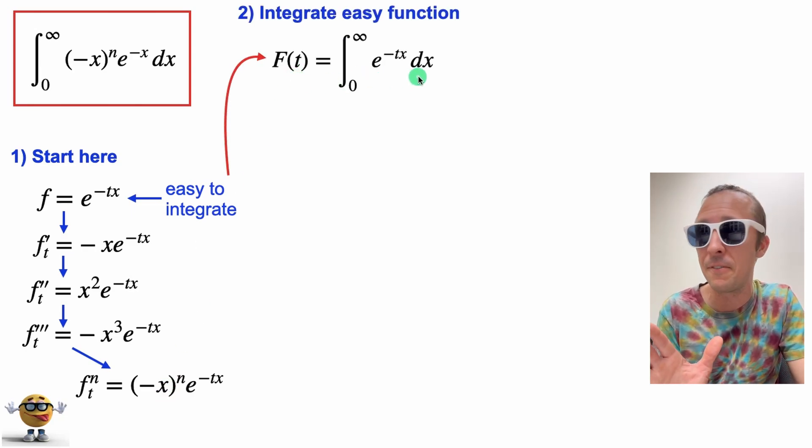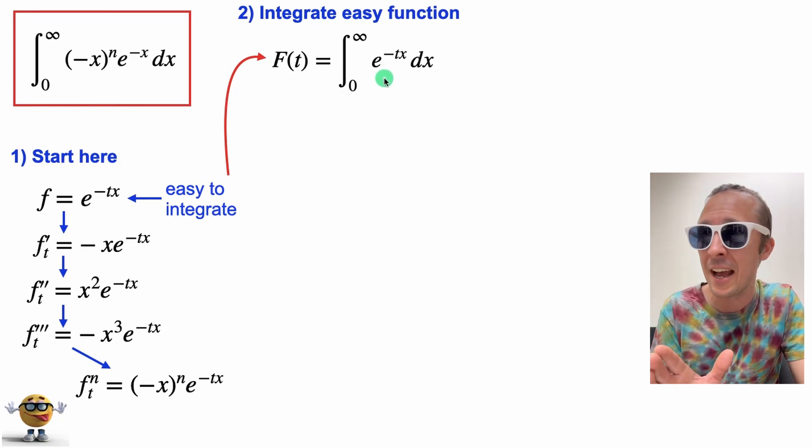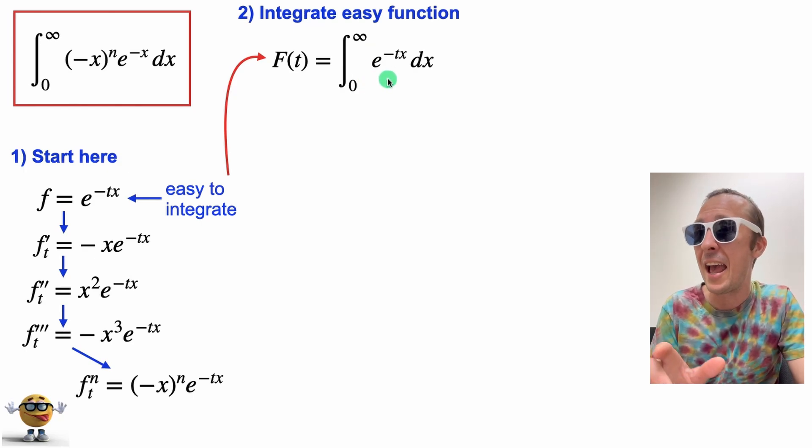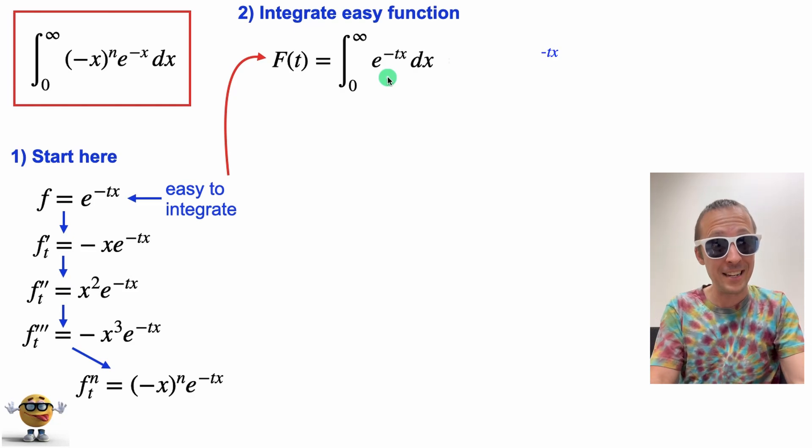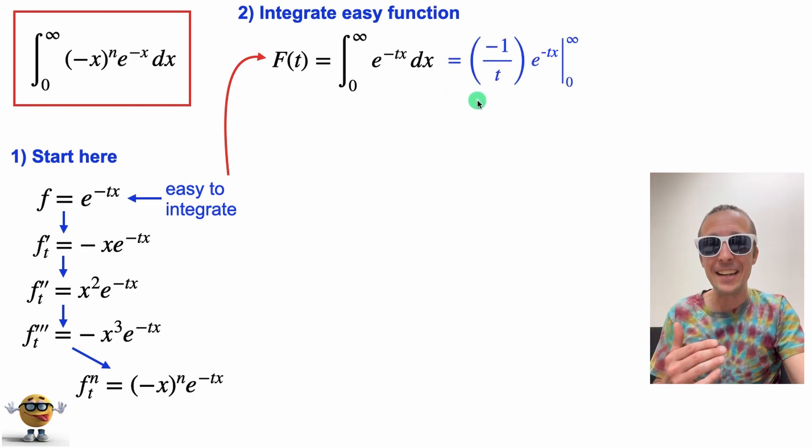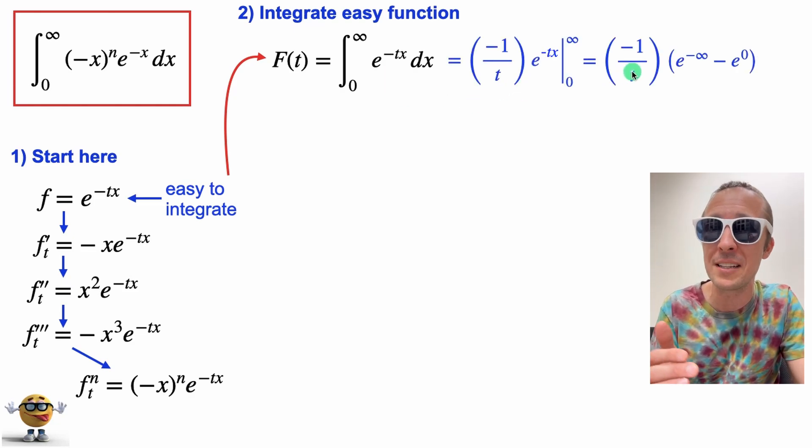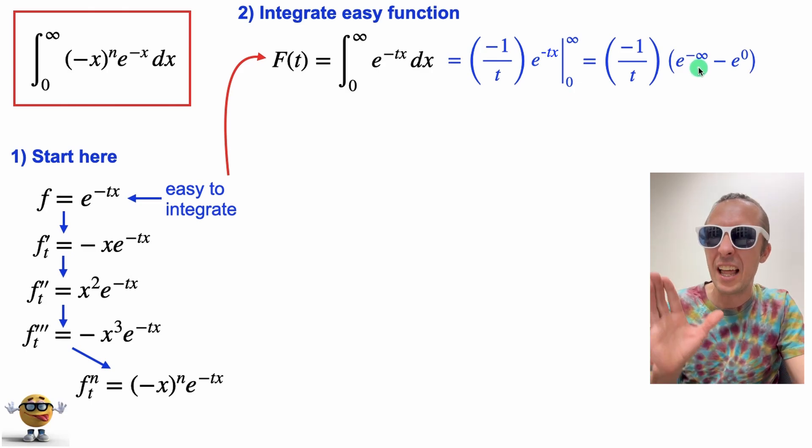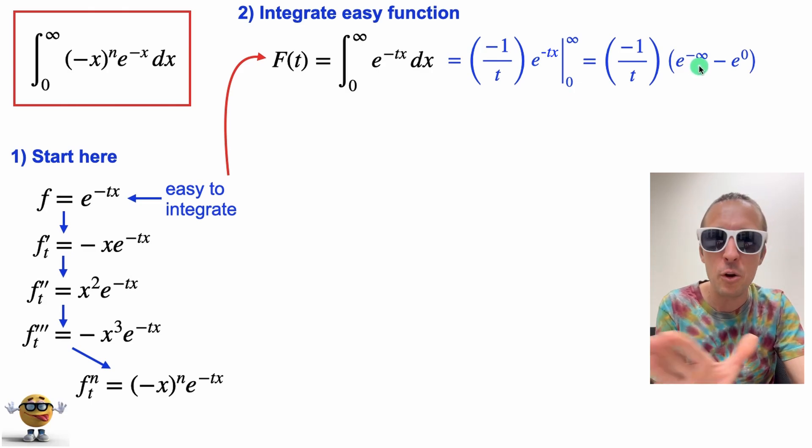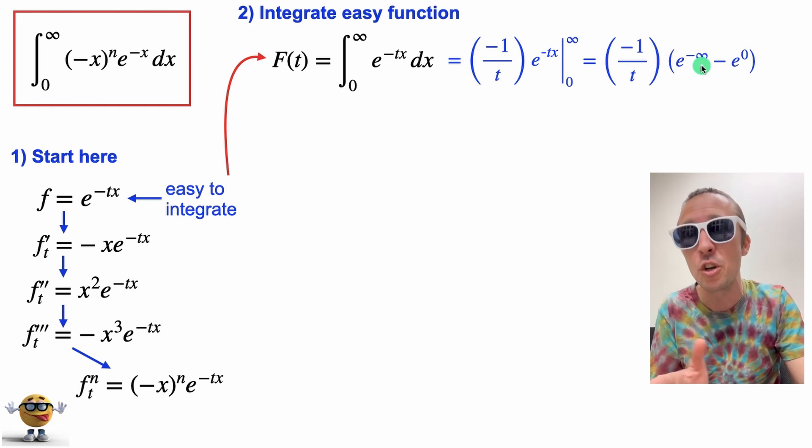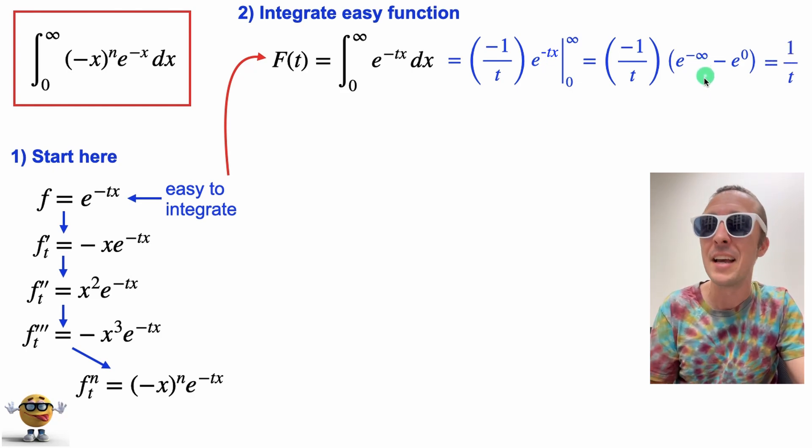So we'll integrate the easy function, e^(-tx) from zero to infinity, and e^(-tx), that's our friend to integrate, right? Negative one over t, and if we plug in our limits, I know mathematicians don't like to plug in infinity here, but just bear with me. This is like the limit as x goes to infinity. Anyways, it's one over t.